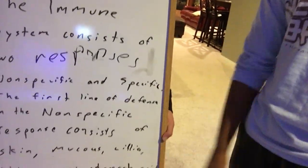The immune system consists of two responses: non-specific and specific. The first line of defense in the non-specific response consists of skin, mucus, cilia, saliva, and stomach acid — all keeping out those pesky pathogens.